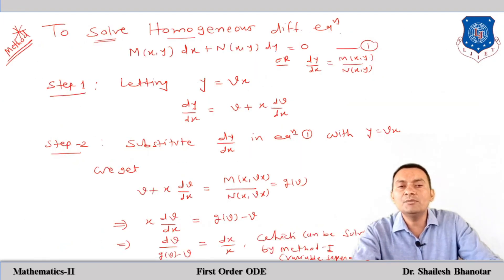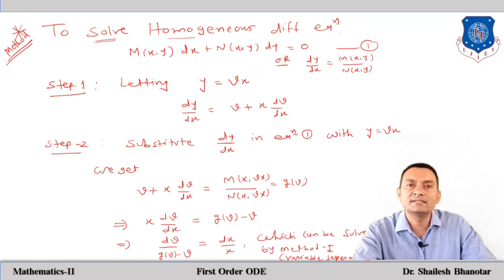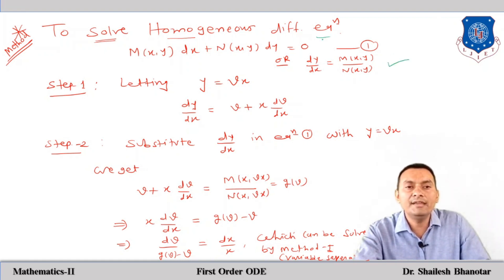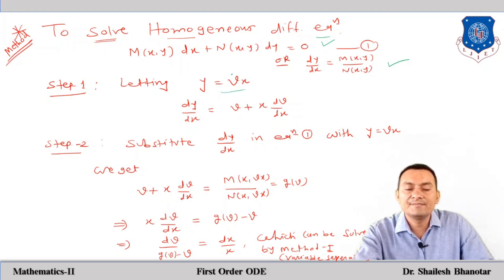To solve a homogeneous differential equation, the method is: Step 1 — let y = vx. Step 2 — differentiate both sides with respect to x, giving dy/dx = v + x·(dv/dx). This substitution transforms the equation into a separable form.